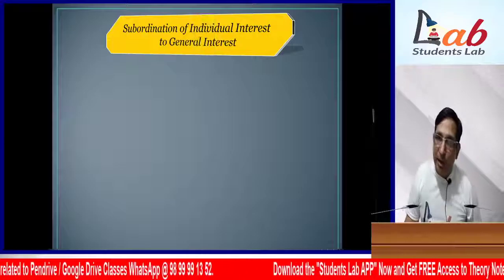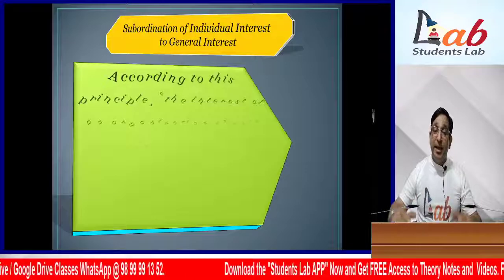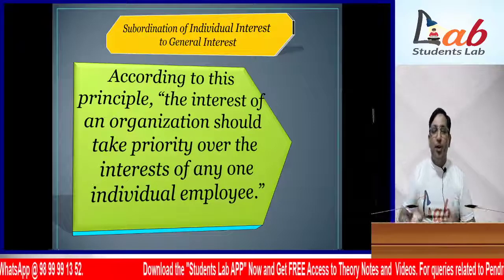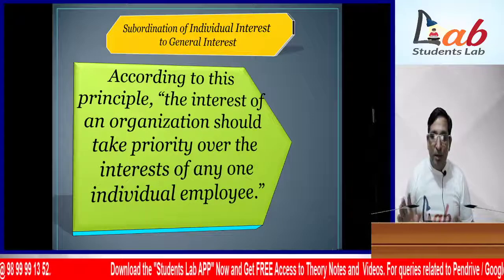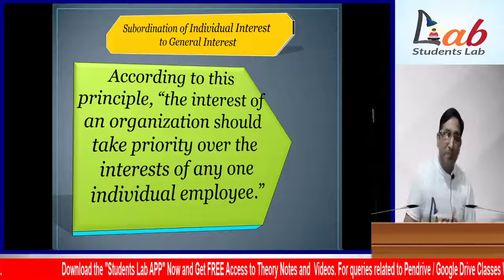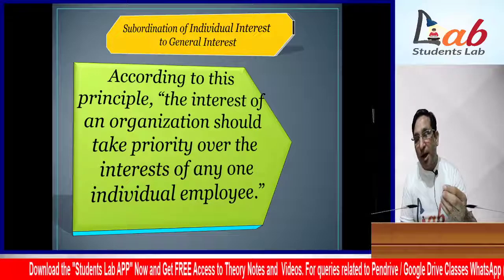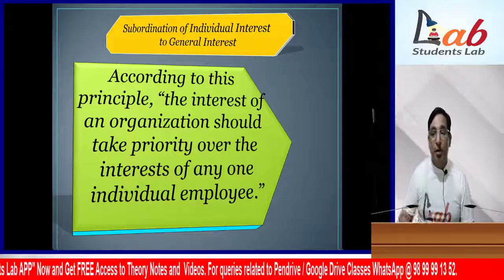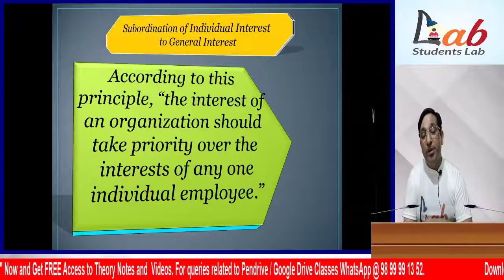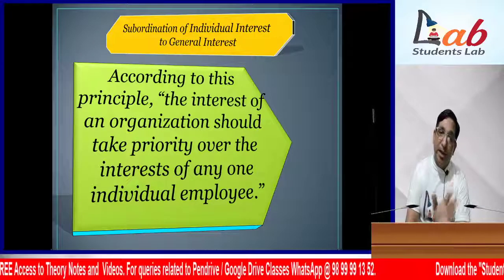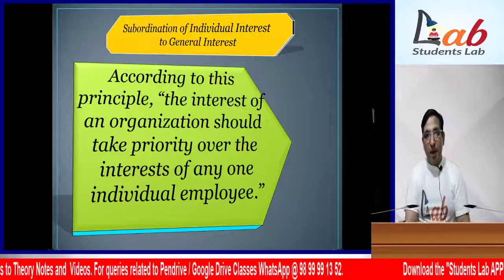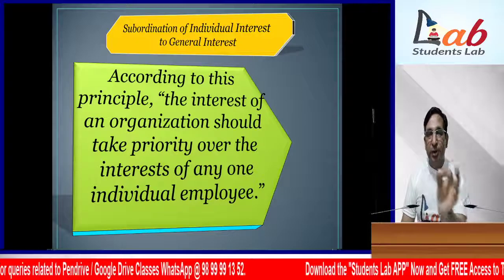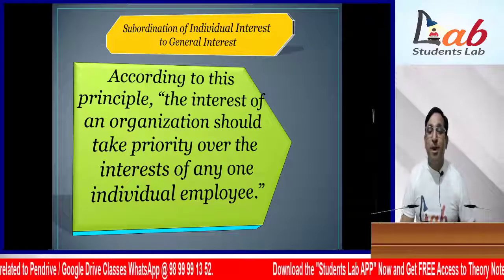The next principle was Subordination of Individual Interest to General Interest. If you face two interests - one of the organization and one personal - you should give up your personal interest and keep the company's benefit in mind. Henry Fayol said: leave your personal interest and prioritize the company's interest, because if the company survives, you will survive too. This is called Subordination of Individual Interest to General Interest.